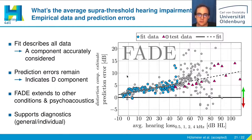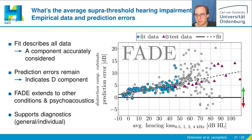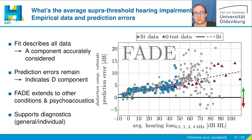The same pattern was found with FADE — linearly increasing prediction errors — since the model misses something, just as Puff misses something: some form of hearing impairment needed to make accurate predictions. Since these prediction errors remain for both models, which were completely different but accurately take into account the contribution of different frequency bands to speech recognition thresholds, these prediction errors appear to indicate the D component.